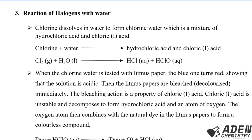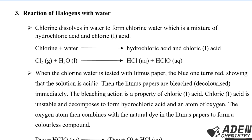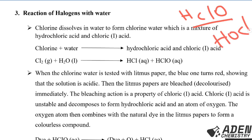The third chemical property is the reaction of halogens with water. Chlorine dissolves in water to form chlorine water, which is a mixture of hydrochloric acid (HCl) and hypochlorous acid (HOCl). The chemical equation is: Cl₂ + H₂O → HCl + HOCl. Hypochlorous acid can be written as HClO or HOCl.